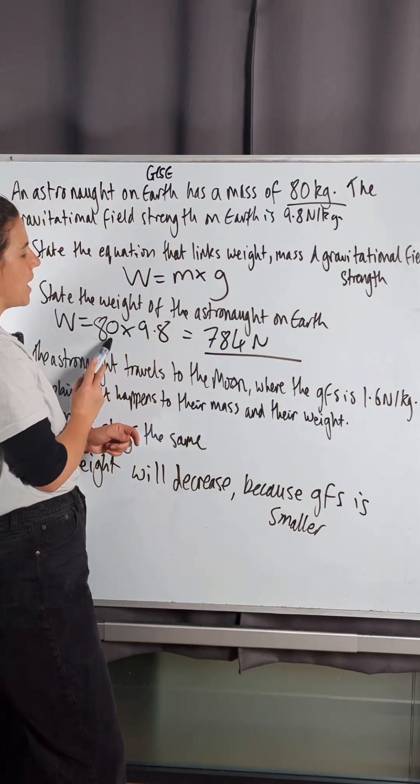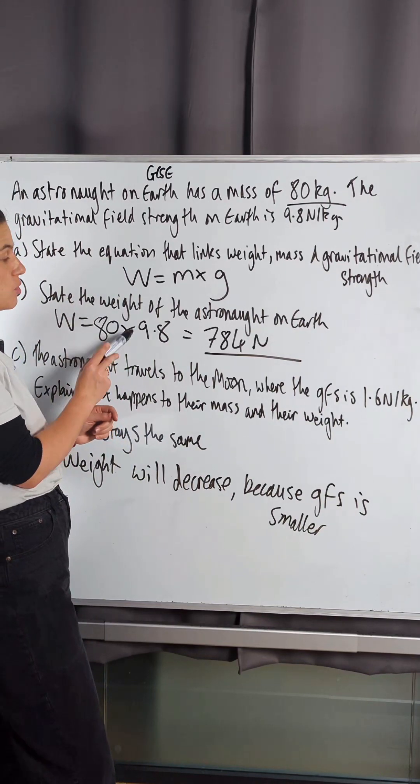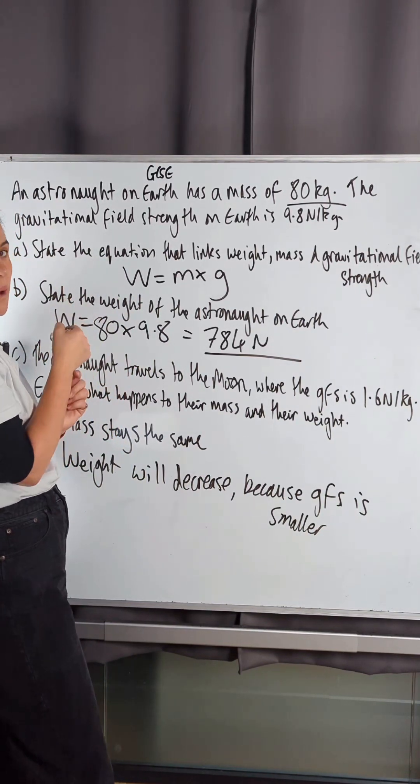So, if we're timesing their weight of 80 kilos by a smaller number, so their mass of 80 kilos by a smaller number, we're going to get a smaller weight.